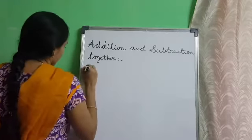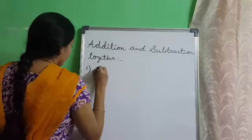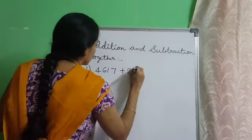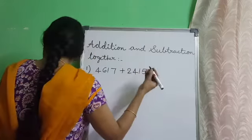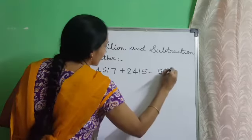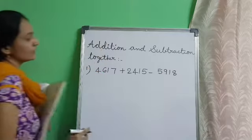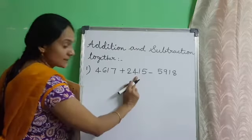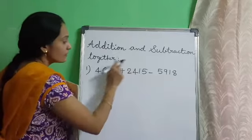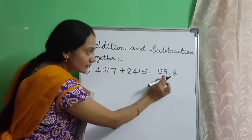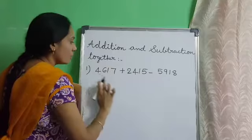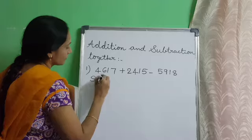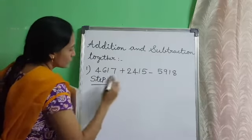The first problem is 4617 plus 2415 minus 5918. Here we have to follow two steps. First, we will add the first two numbers, and then subtract the third number from the sum of the first two numbers. Start step 1.